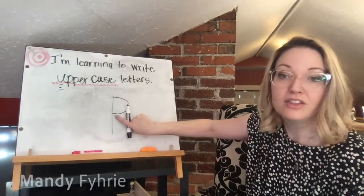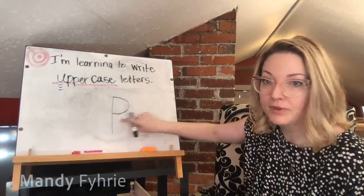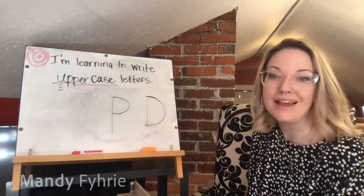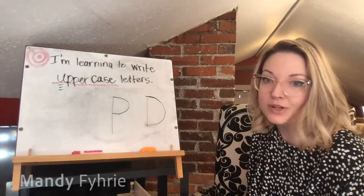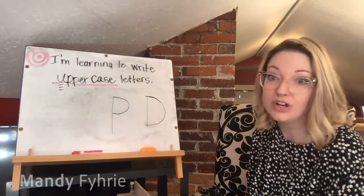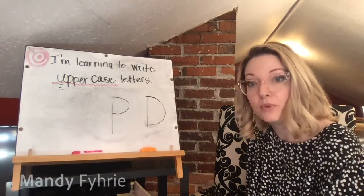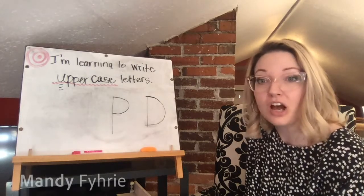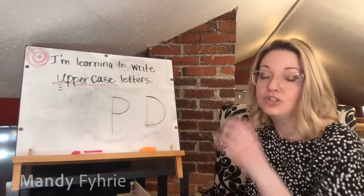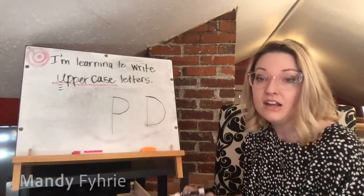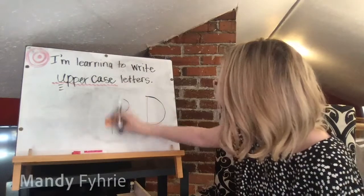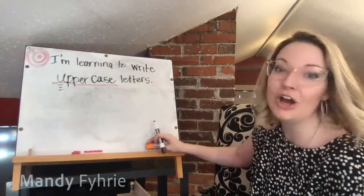Capital P: big line down, hop to the top, one little curve. If you're struggling with the bump, put a little dot right there so you know where to stop. If your curve is too big it might look like a D, so keep it to just the top half. Nice neat handwriting matters because we write to communicate — we write so others can read it.